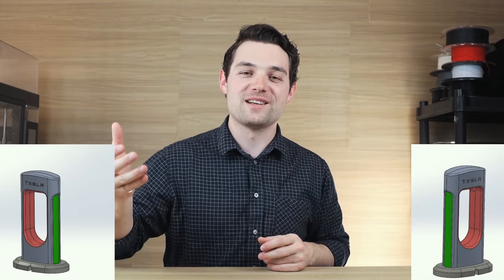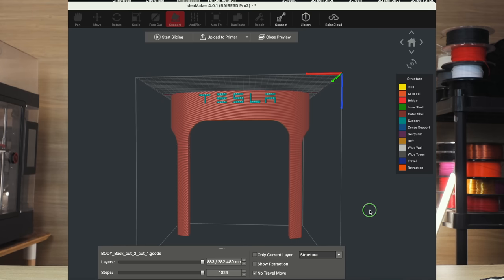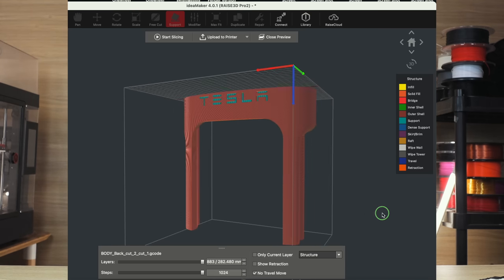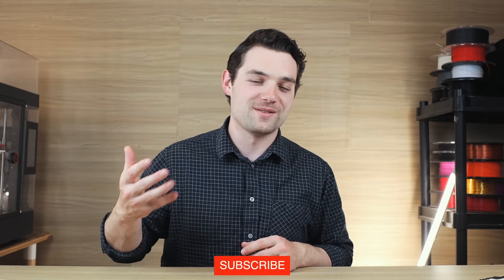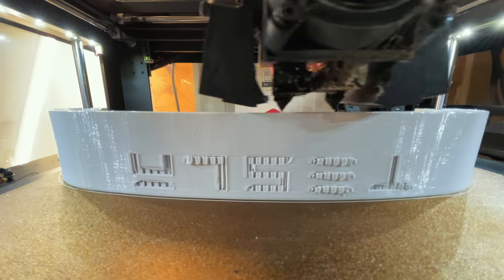However, before we go into the next upgrades, I did just finish a couple pieces from a giant Tesla charger that I'm printing for the next video. It's like 300 to 400 hours total of printing. So if you do want to see that video, make sure that you do hit the subscribe button because that is definitely going to be one of my favorite videos. It's going to be awesome. That's coming up next week.